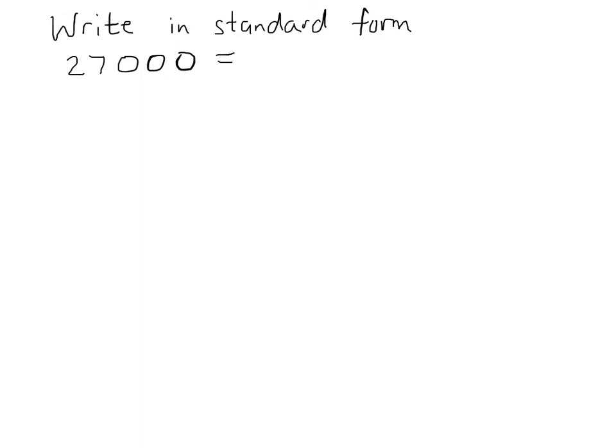27,000 is equal to 2.7 times 10,000, where 10,000 is 10 to the power 4.